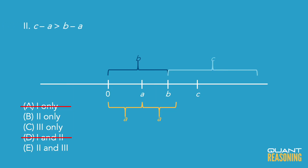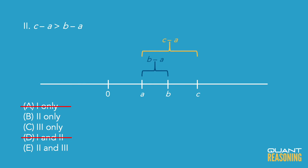The second Roman numeral compares C minus A to B minus A. Looking at the number line, C minus A would be the distance between A and C, and B minus A would be the distance between A and B. Can we tell which of those distances is greater, just based on the free information? Yes — we can see visually that C minus A is greater than B minus A, because C is farther away from A than B is.